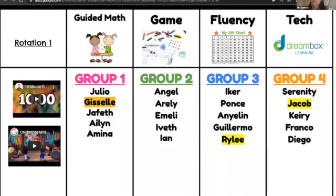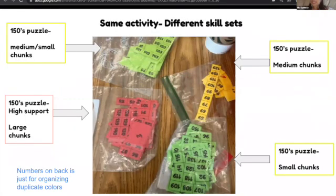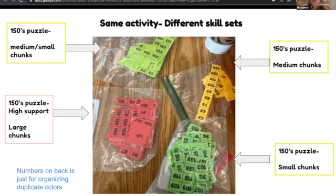The same process applies where kids are working on an activity that is differentiated. You may tell kids their color — just like they know their bin colors. You may say, 'Apples, you're going to be getting yellow,' and they'll know to get the activities or papers that are on yellow cardstock or Astrobright paper. Or you can just put a sticker on it and tell the kids to look for their sticker color — that's the activity they're going to get.